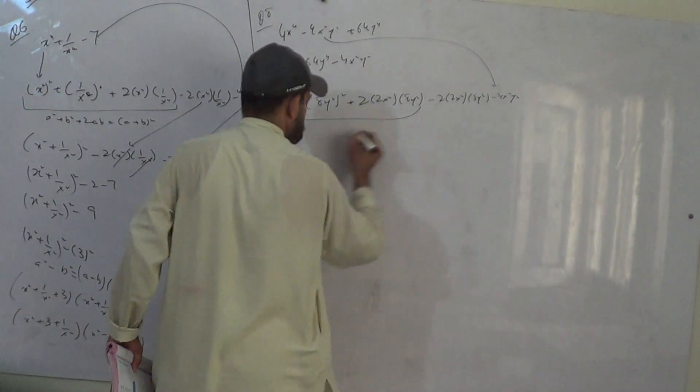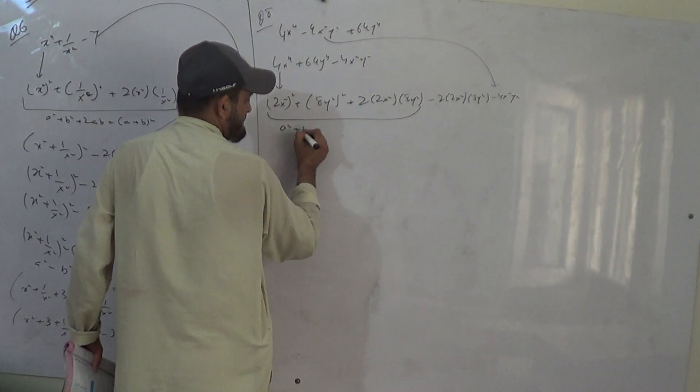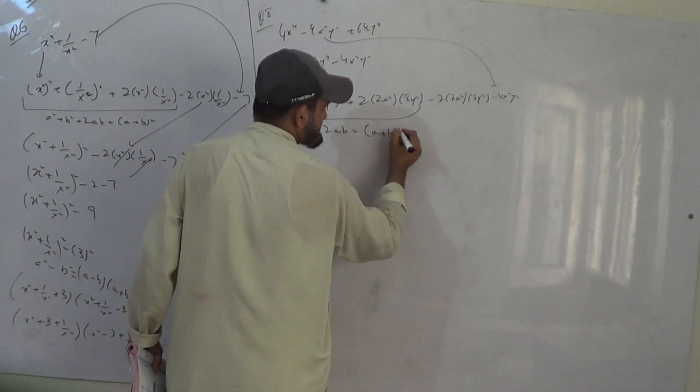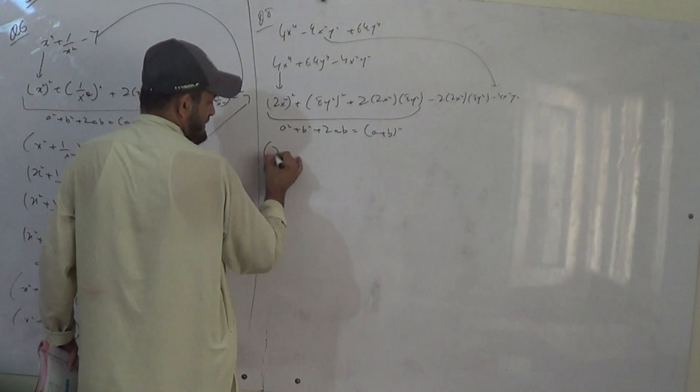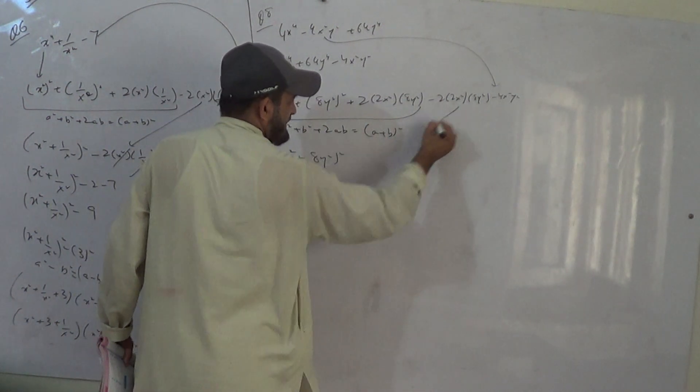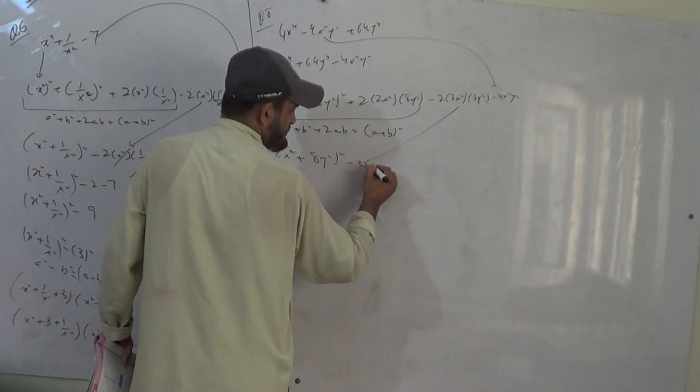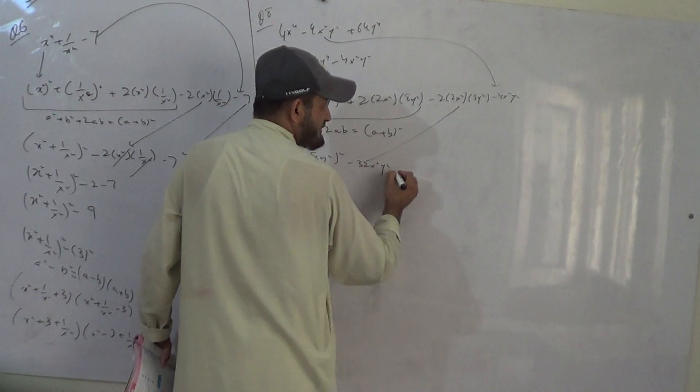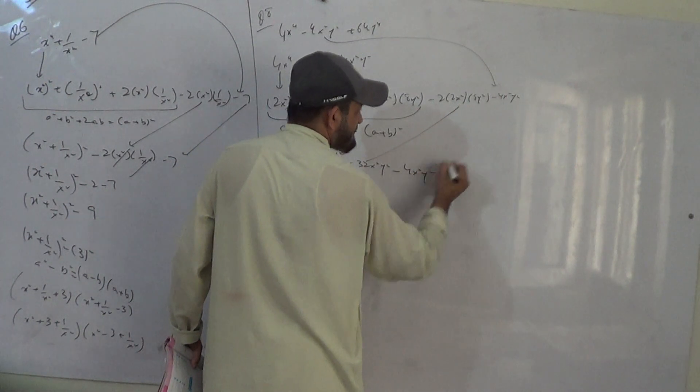Now it will be a square plus b square minus 2ab equal to a minus b whole square. Therefore 2x square whole square plus 8y square whole square minus 32x square y square. Minus 4x square y square.